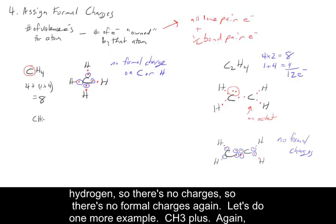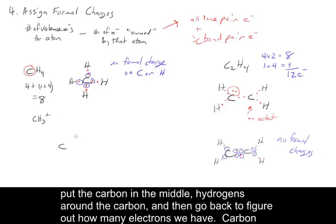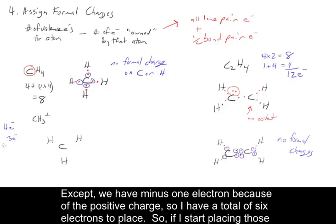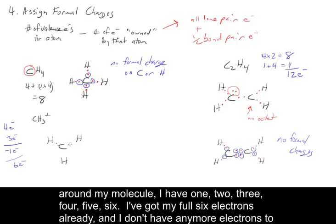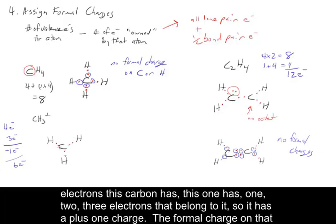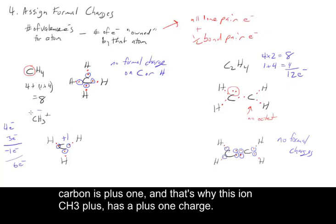Let's do one more example: CH3+. Put carbon in the middle and hydrogens around it. Carbon has four electrons times one, and the three hydrogens give three electrons, totaling seven. But we subtract one electron because of the positive charge, giving six electrons to place. Placing those: one, two, three, four, five, six — all six electrons are used. This carbon won't have a full octet. Counting electrons owned by carbon: one, two, three — so it has a plus one formal charge. That's why the ion CH3+ has a plus one charge.